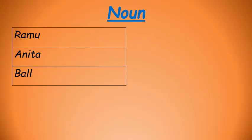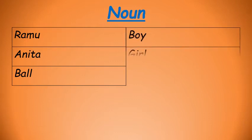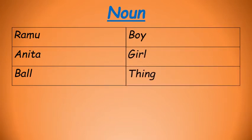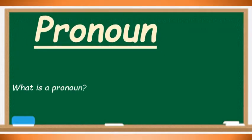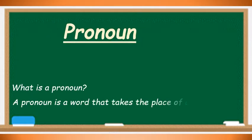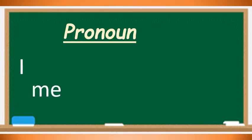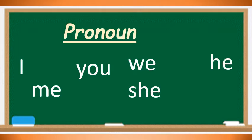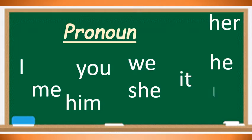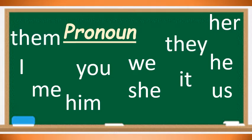Let's list some more nouns: Ramu, Anita, Ball. In this table we have listed three nouns — Ramu, Anita, and Ball. Ramu is a boy, Anita is a girl, and Ball is a toy or a thing. In today's lesson, we are going to learn about pronouns. Now what is a pronoun? A pronoun is a word that takes the place of a noun, like I, me, you, we, she, he, it, him, her, us, they, and them. These are all pronouns.